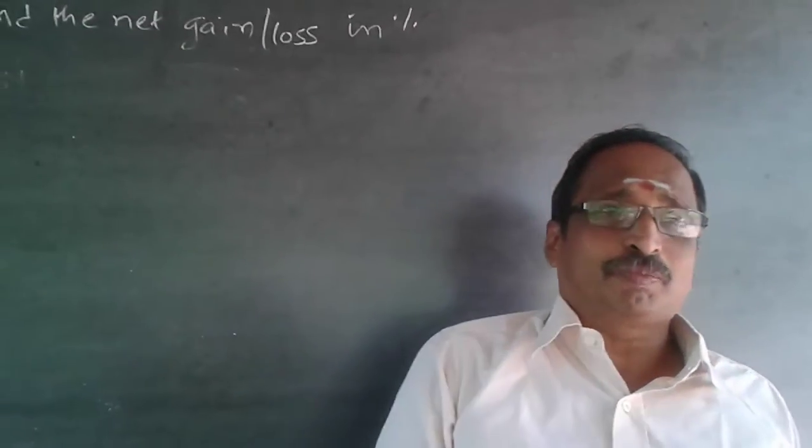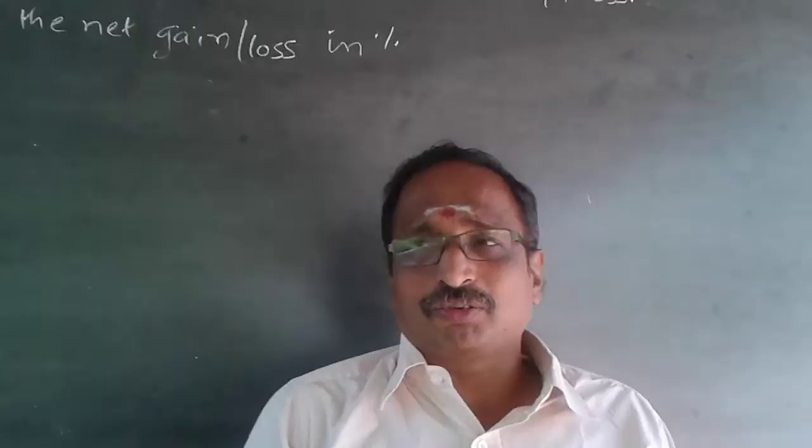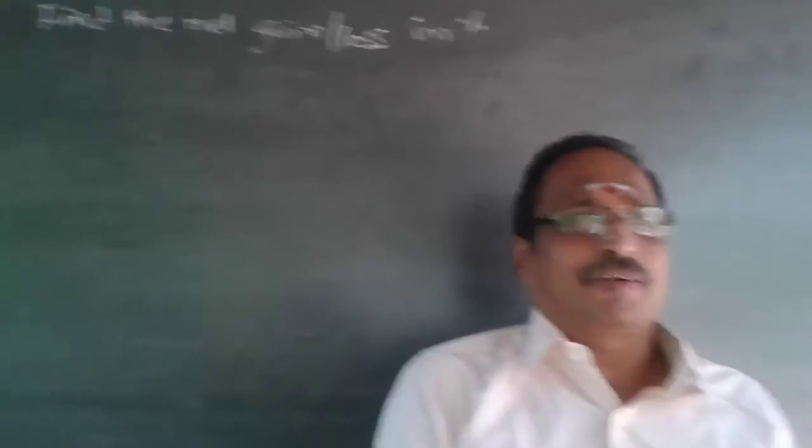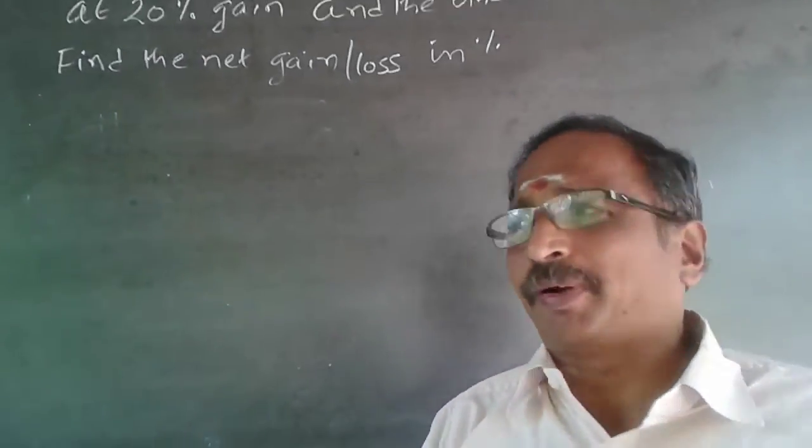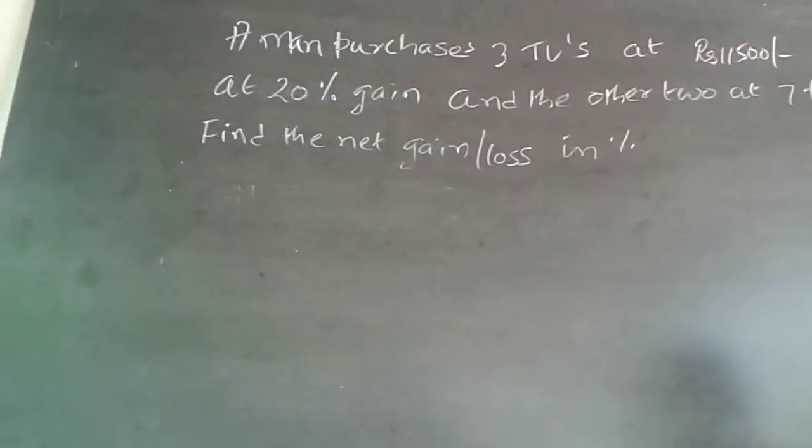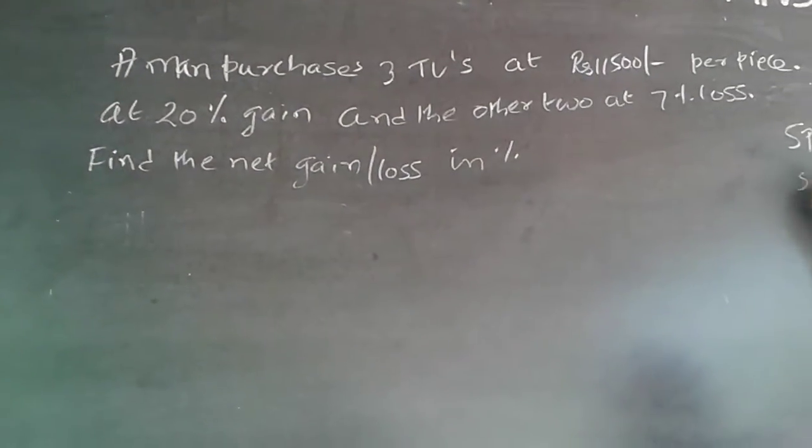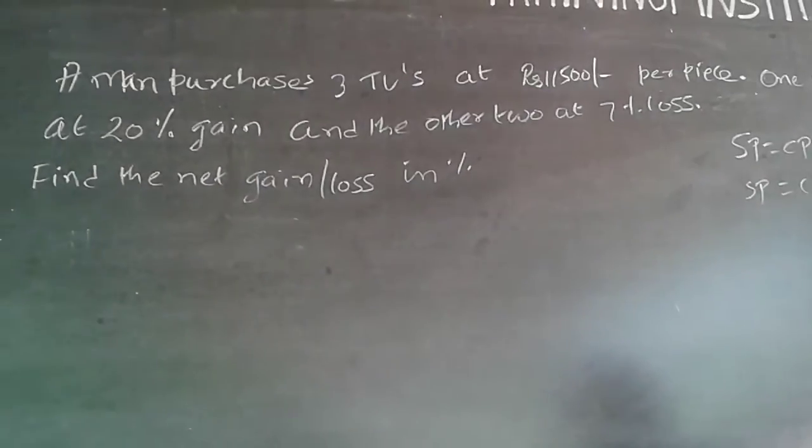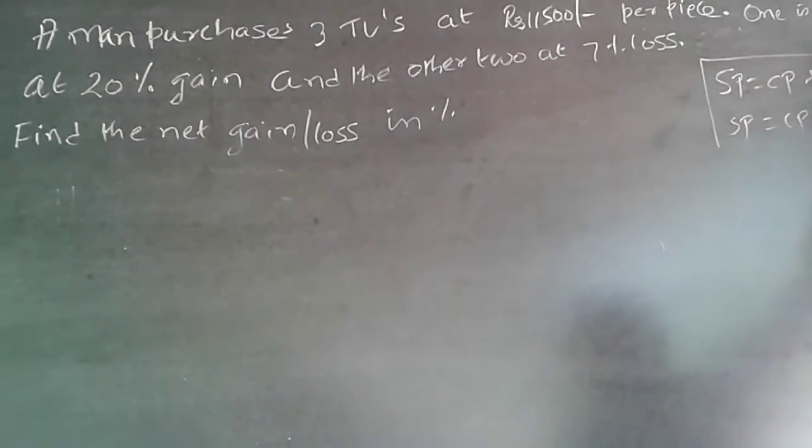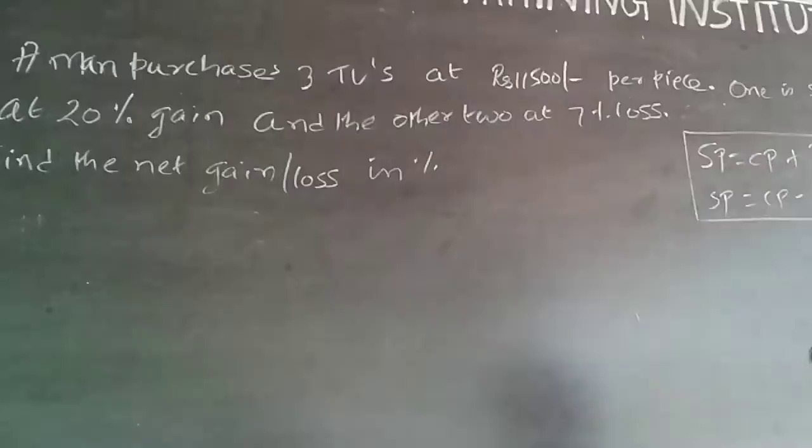These are all known as cost price, selling price, and profit. Any cost price, selling price, it is always like this. Selling price is equal to cost price plus profit in case I make profit. Selling price will be equal to cost price minus loss in case I make loss. This is the Bible for all your cost price and selling price.